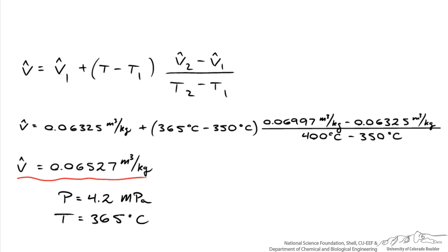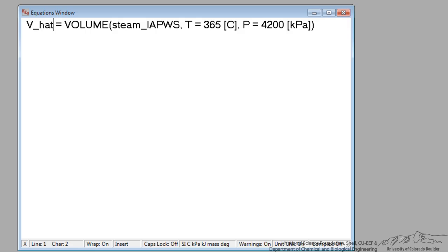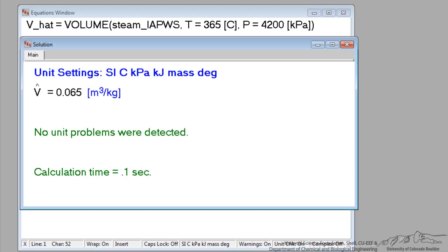Interpolating the superheated steam tables is tedious. There's three interpolations that you need to do. You can do this in one line using EES, which I'm showing here. So a variable we'll call V-hat, and I'm using the steam IAPWS. It's a little bit more accurate than using just water as an equation of state. The temperature of 365, pressure of 4.2 megapascal or 4200 kilopascal. And when I run this, I get a specific volume of 0.065 cubic meters per kilogram. And that agrees well with what we come up with here.